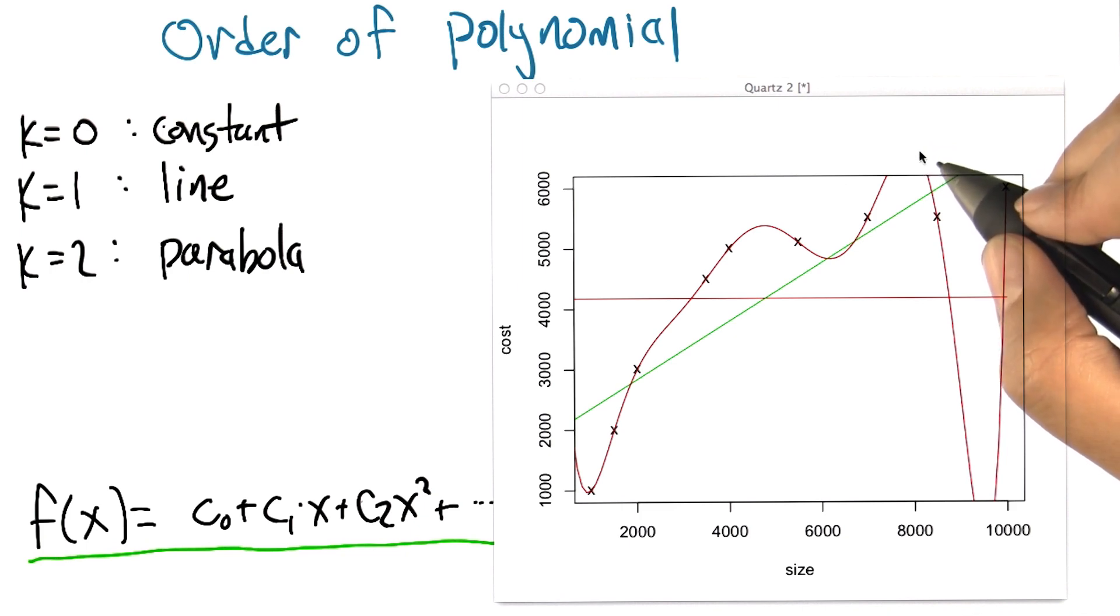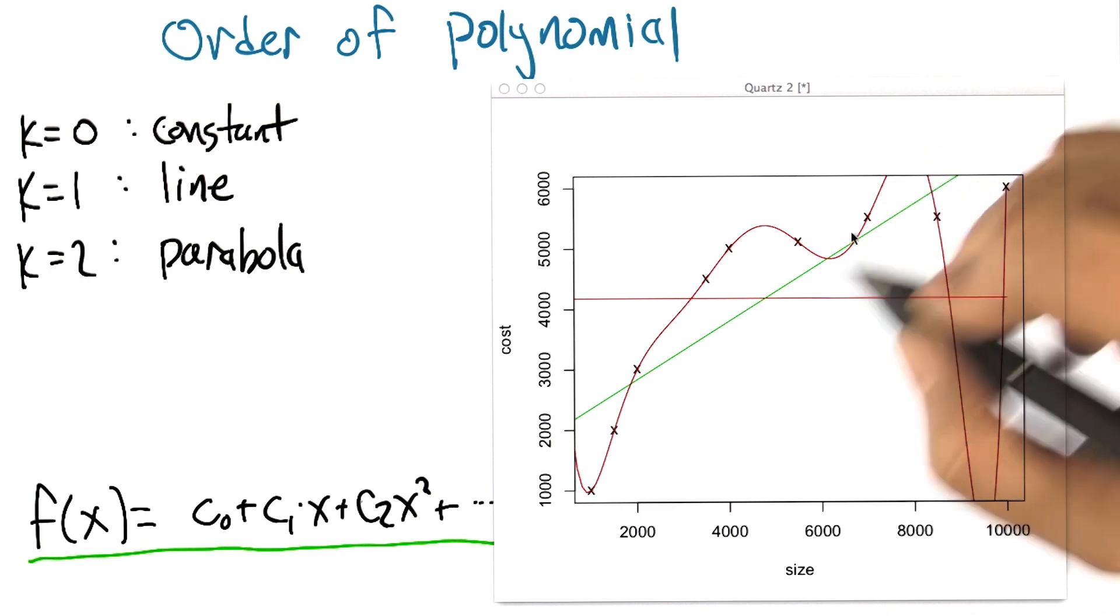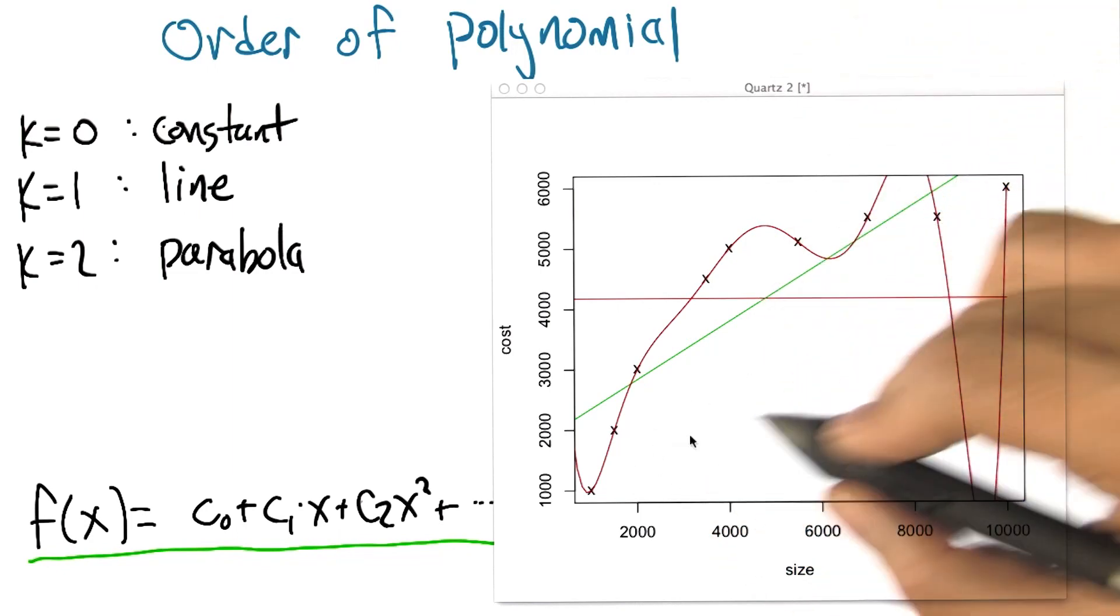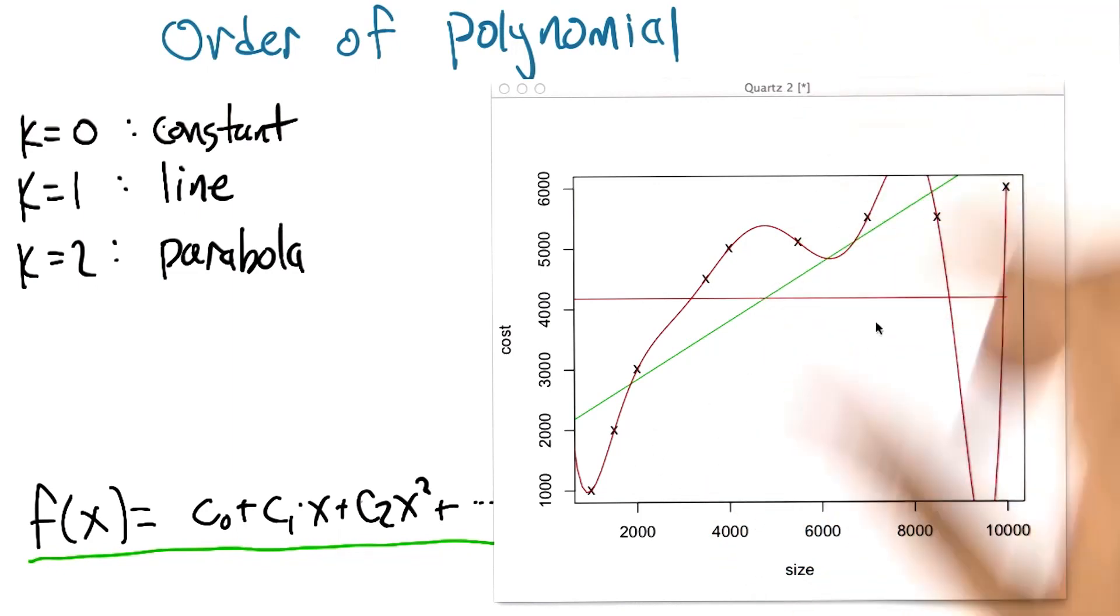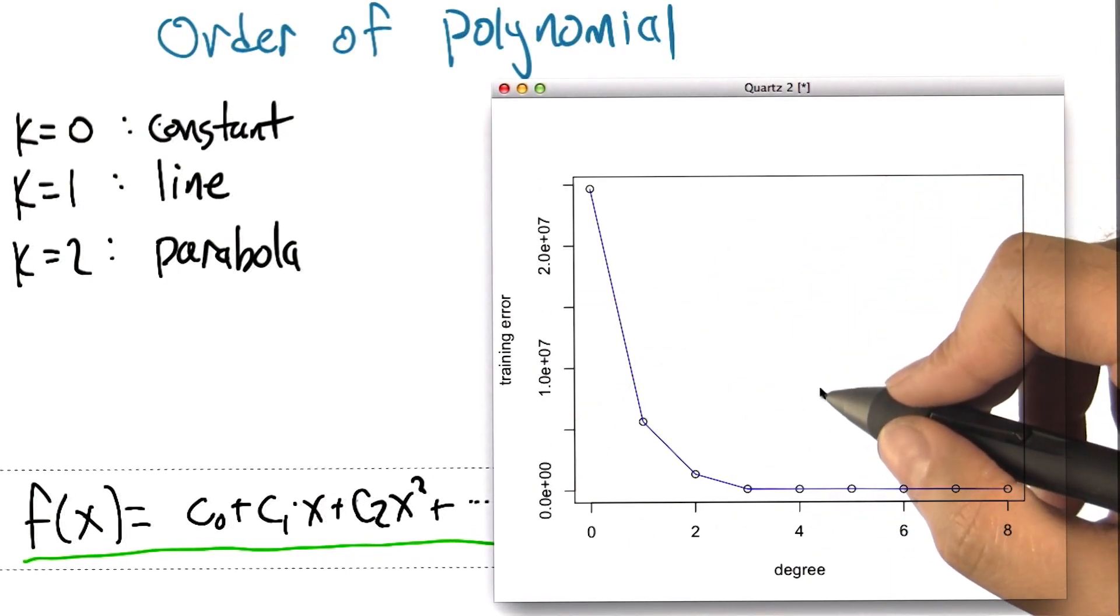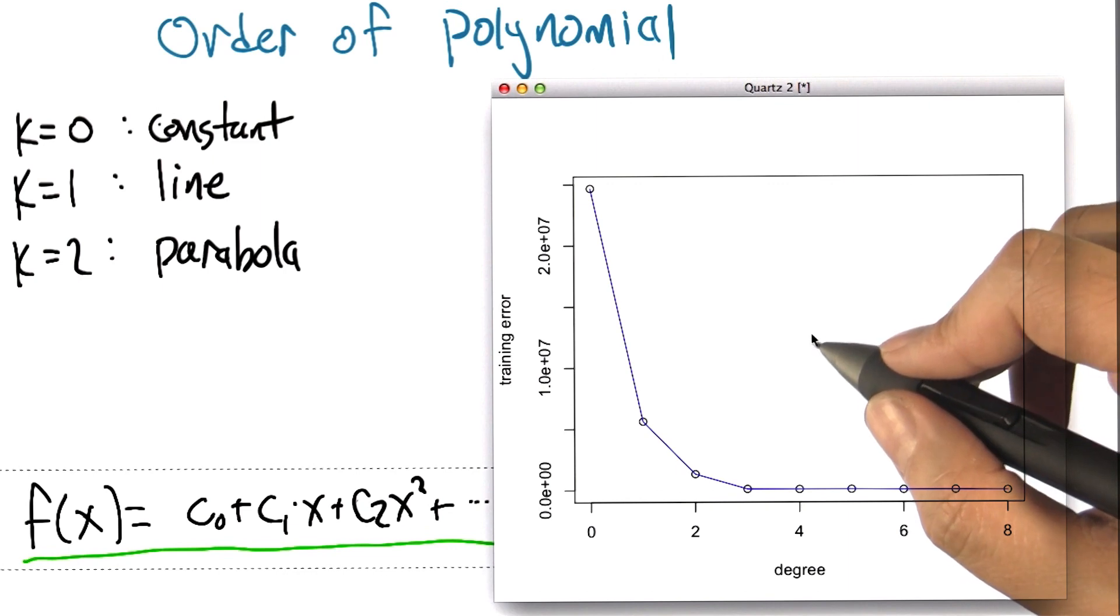But let's just show that we really are, as we have more degrees of freedom, we're fitting the error better. Let me show you what it looks like. The amount of error that we got for the best fit for each of these orders of k. All right, and so what you see when we actually plot the squared error,